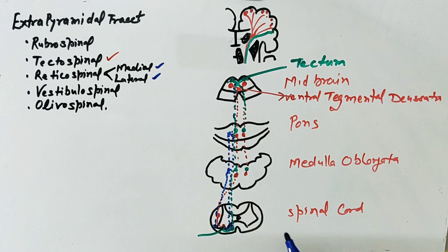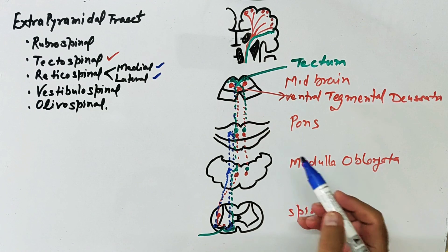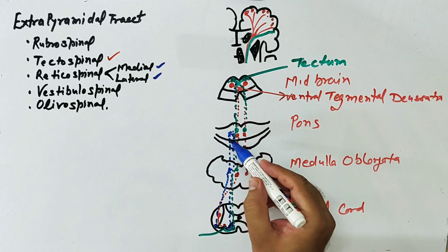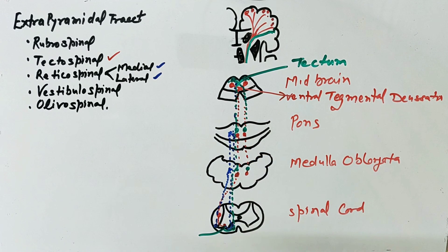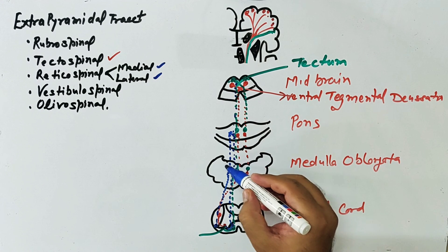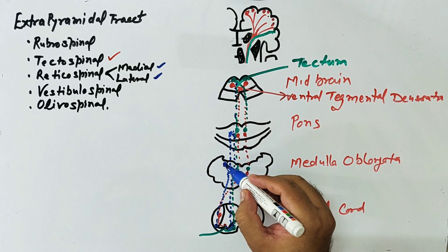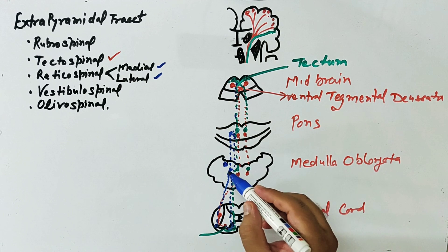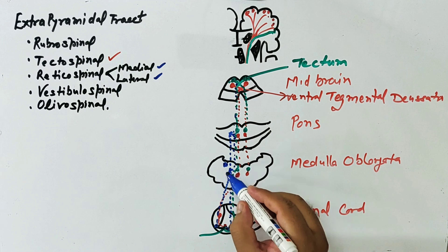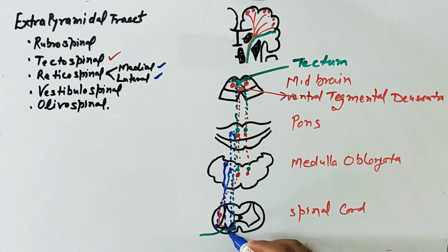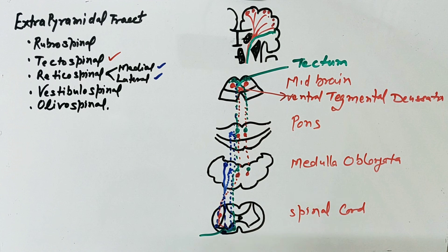The vestibulospinal tract starts from the pontomedullary junction — at the junction of the pons and medulla, where the vestibular nuclei are present. From the vestibular nuclei, the vestibulospinal tract passes to the anterior side of the spinal cord.